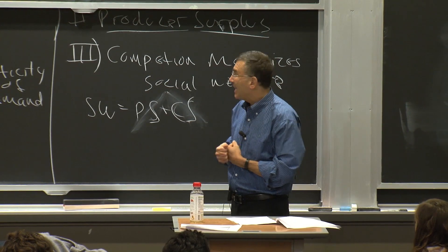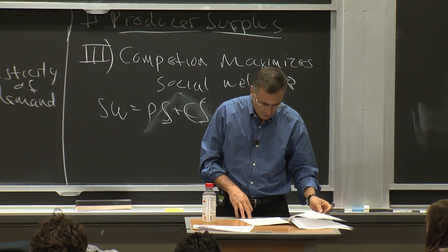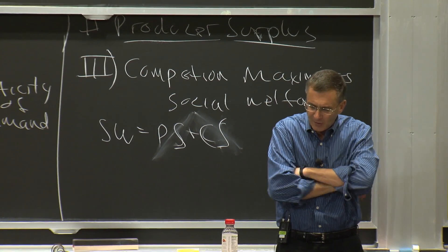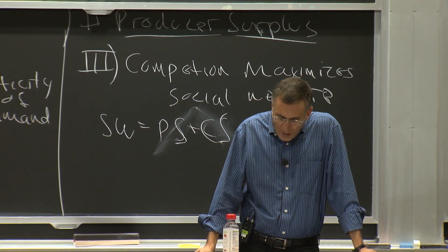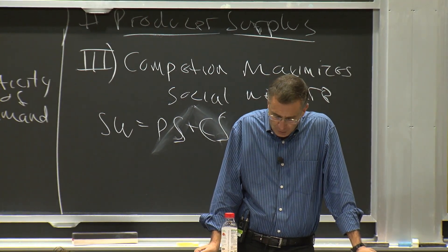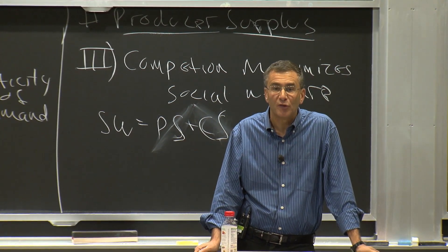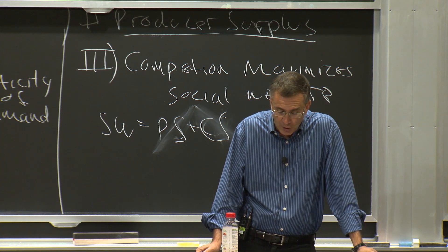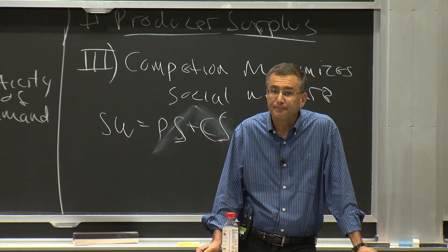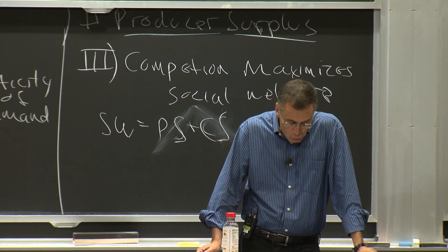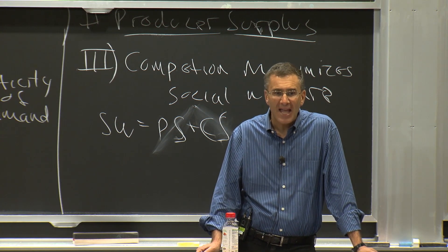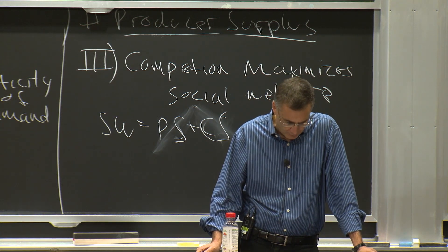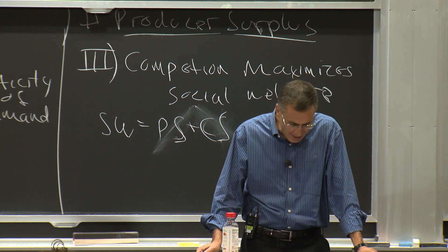What we're going to show is that the competitive market makes that pie as big as possible. Let's look at Figure 13.6. It has a supply and demand curve. The competitive outcome, where supply equals demand with no market interference, gives us Q1 units per year at a price of P1. What we'll see is that this outcome also maximizes the sum of the two triangles representing consumer surplus and producer surplus.